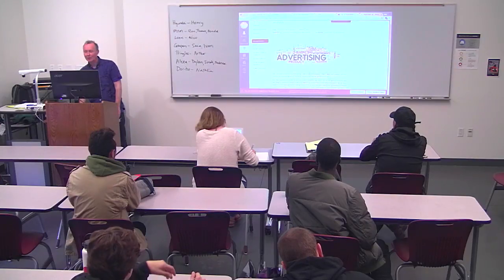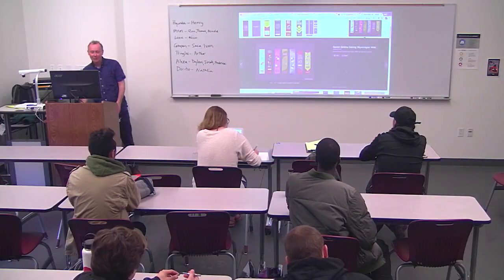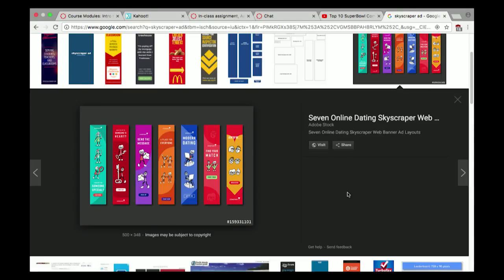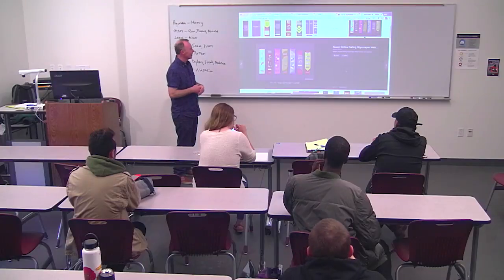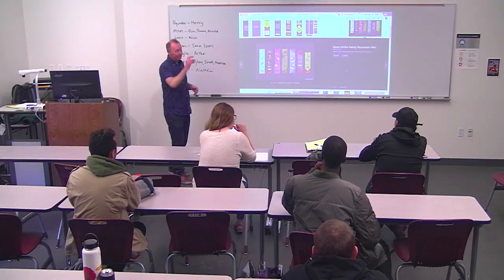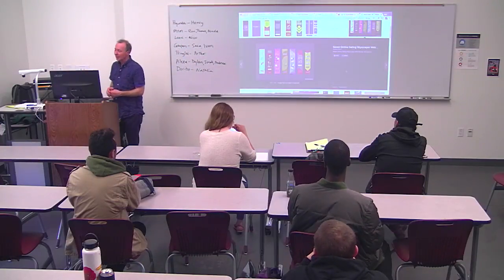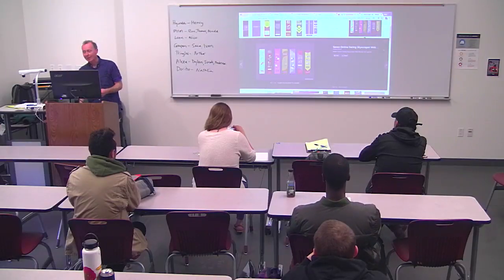There's some information here about different types of advertising, and there is a question on the exam about a digital type which is actually called a skyscraper ad. It's an ad that runs vertical down the side of a web page — those tall skinny ads that are sold on web pages — and there are a variety of others like banner ads and so forth.